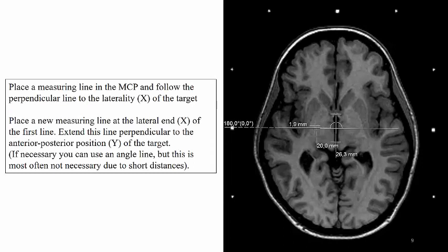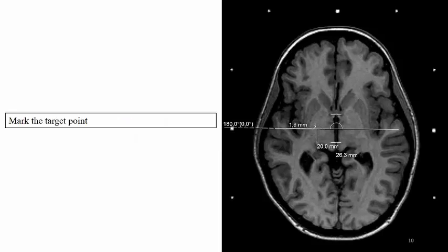We place a measuring line in the MCP and follow the perpendicular line to the laterality of the target. We then place a new measuring line at the lateral end of the first line. We extend this line perpendicular to the anterior-posterior position of the target. We can now mark the target point.